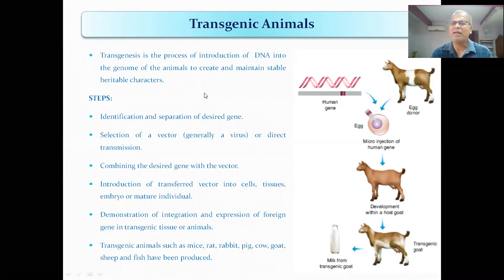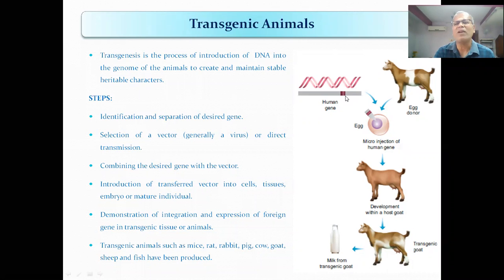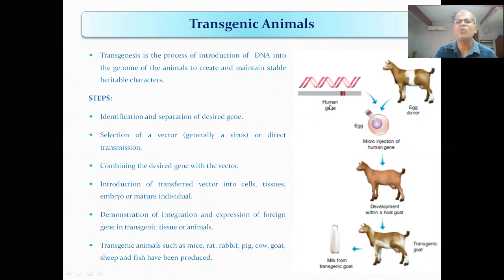Now, how do we do it? It is a methodology. The steps are: first, identification and separation of the desired gene. The desired gene is isolated using restriction enzymes or restriction endonucleases. For example, the human insulin gene is isolated.